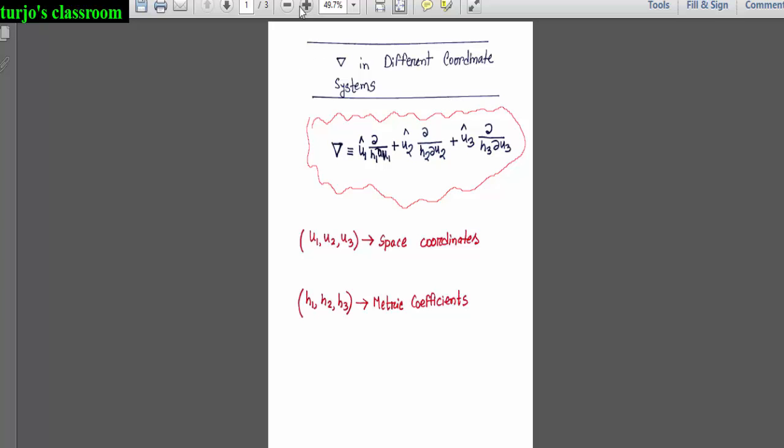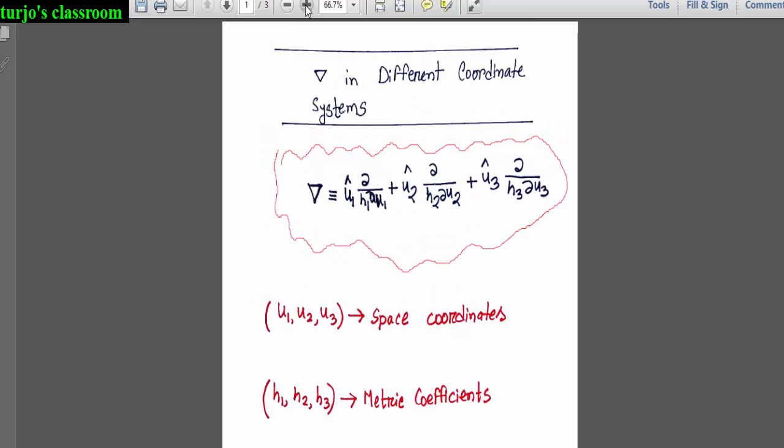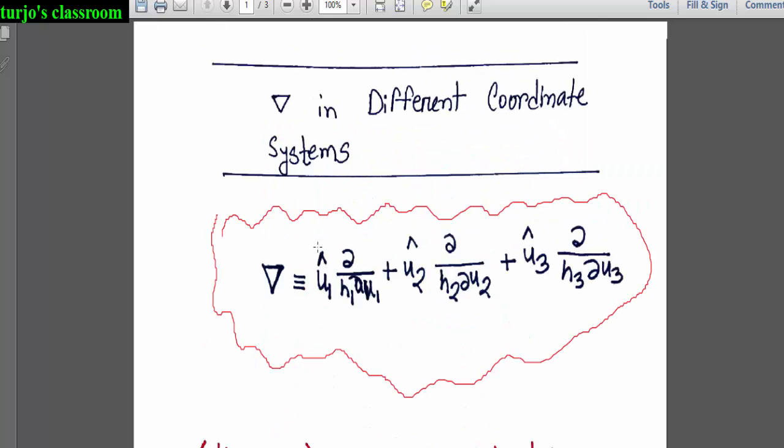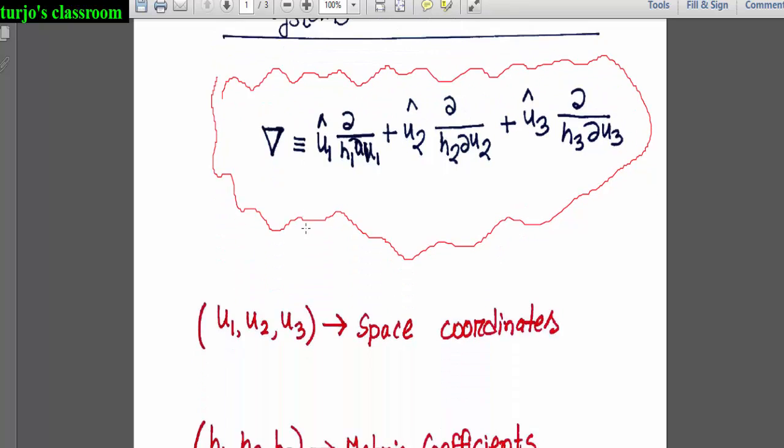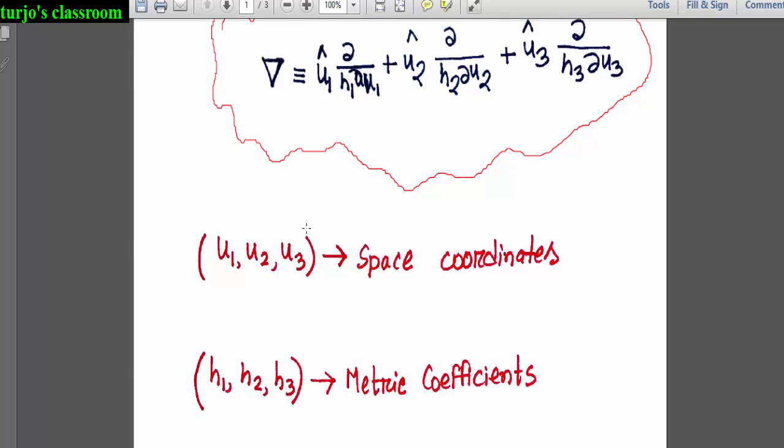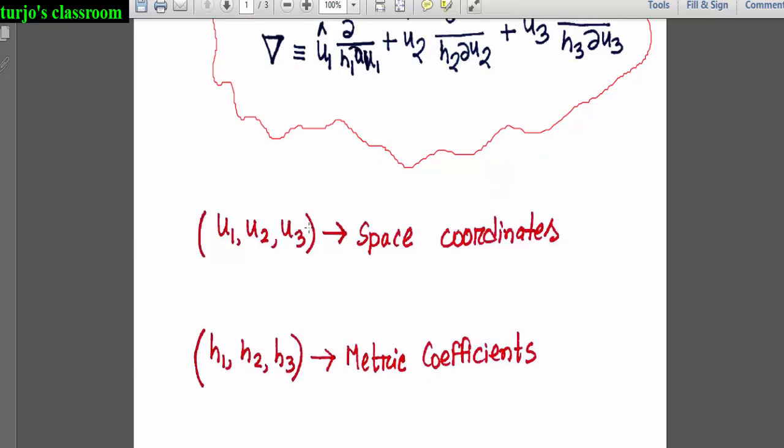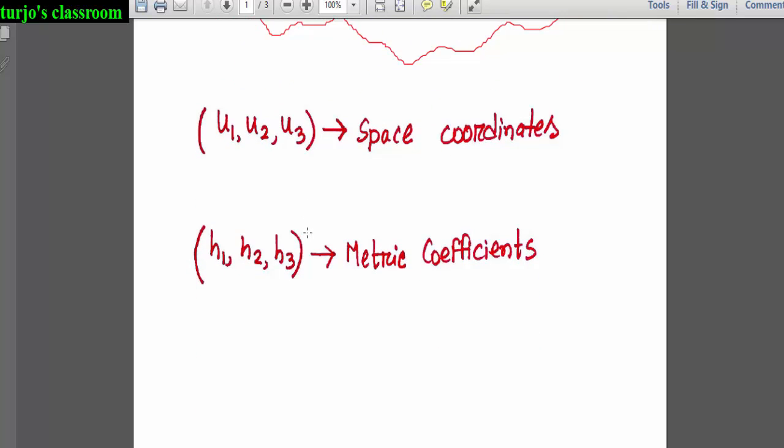That's your list of the coordinate system. Here u1, u2, and u3 are the space coordinates that differ from coordinate system to coordinate system, and h1, h2, and h3 are the metric conversion coefficients.